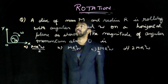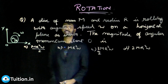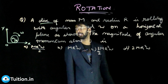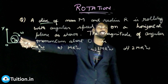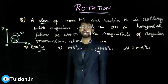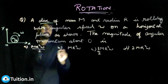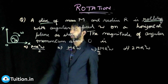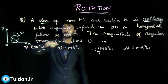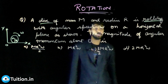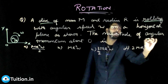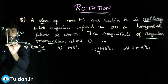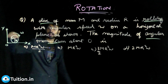Let us look at this previous problem from rotation again. It says a disk of mass m and radius r is rolling with angular speed omega on a horizontal plane. You need to find the magnitude of angular momentum about point O.